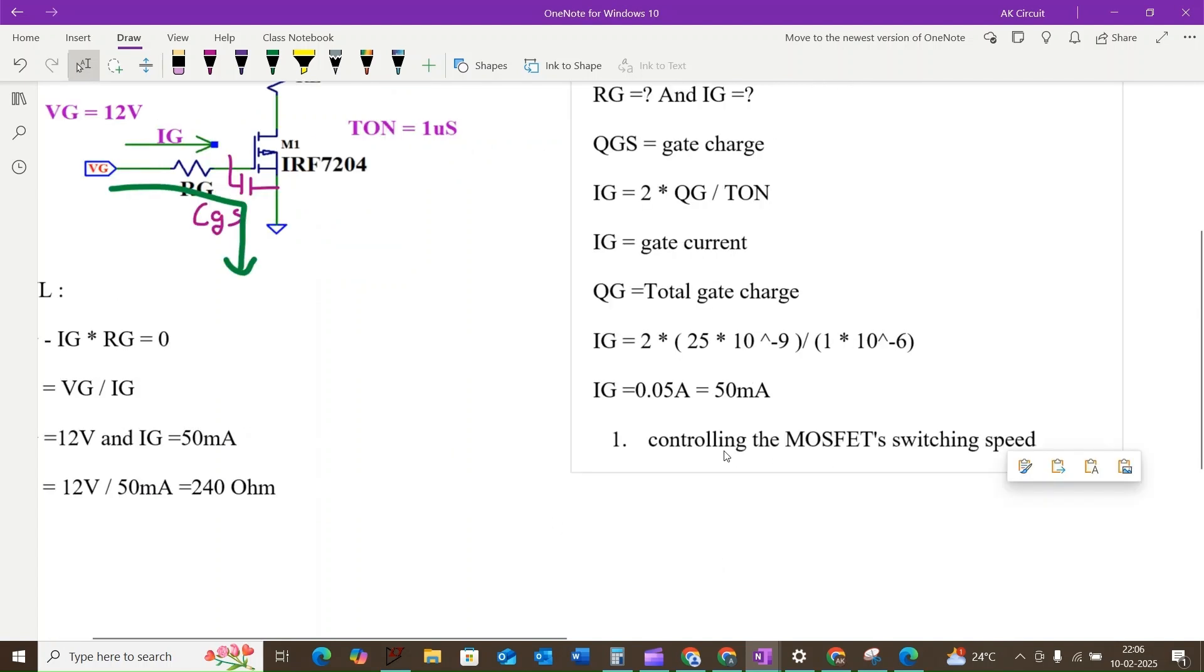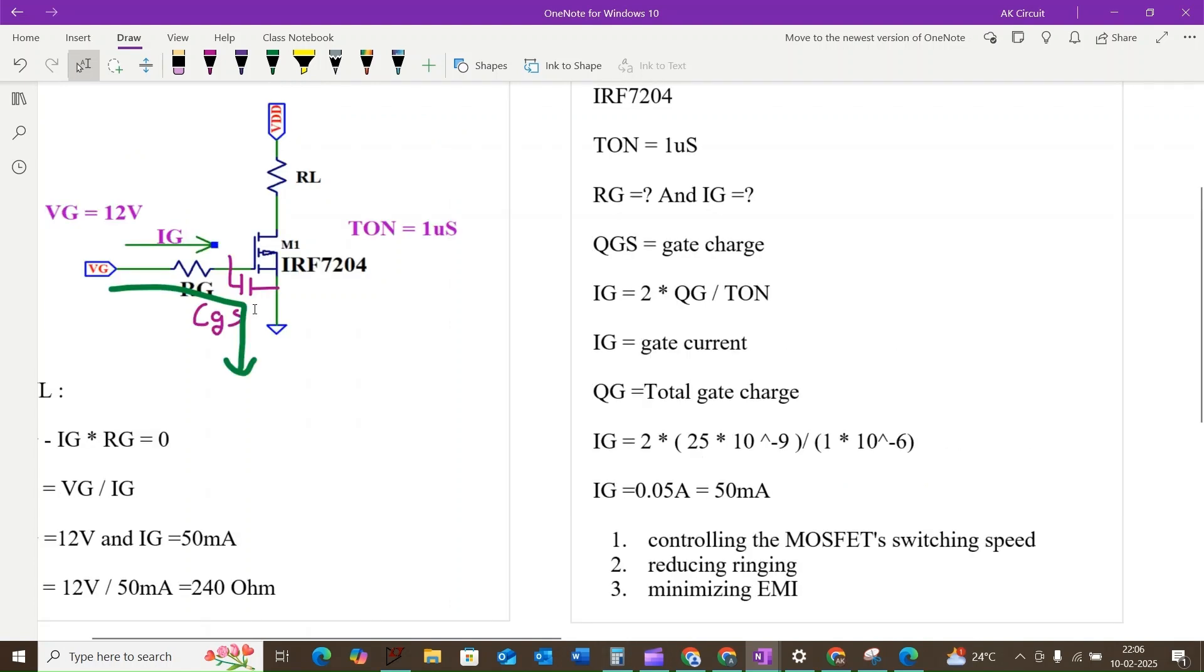Choosing the correct gate resistor is very important for controlling the MOSFET switching speed, reducing the ringing, and minimizing the electromagnetic interference. This calculation provides a good starting point for selecting our gate resistor.